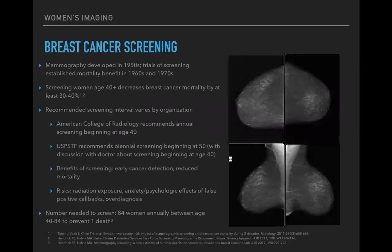Breast cancer screening mammography was developed in the 1950s, and trials of screening mammography established the mortality benefit in screened women in the 1960s and 70s. Screening women age 40 and older decreases breast cancer mortality by at least 30 to 40 percent, and those are thought to be conservative estimates. The number is probably much higher for women who actually undergo screening.